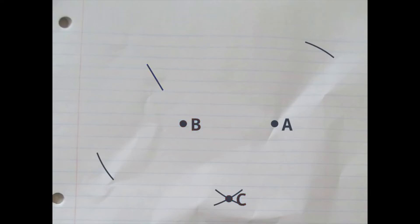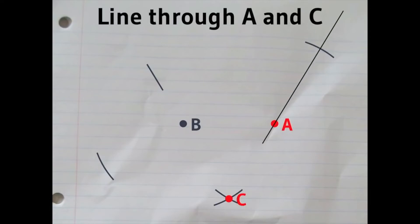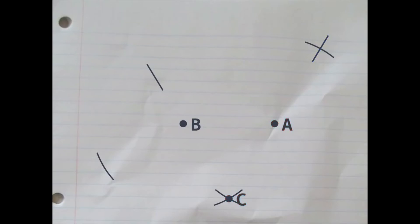Still with the ruler, you draw a line through A and C. And that, you can see, is going to give us a new intersection point. We'll call that point D.